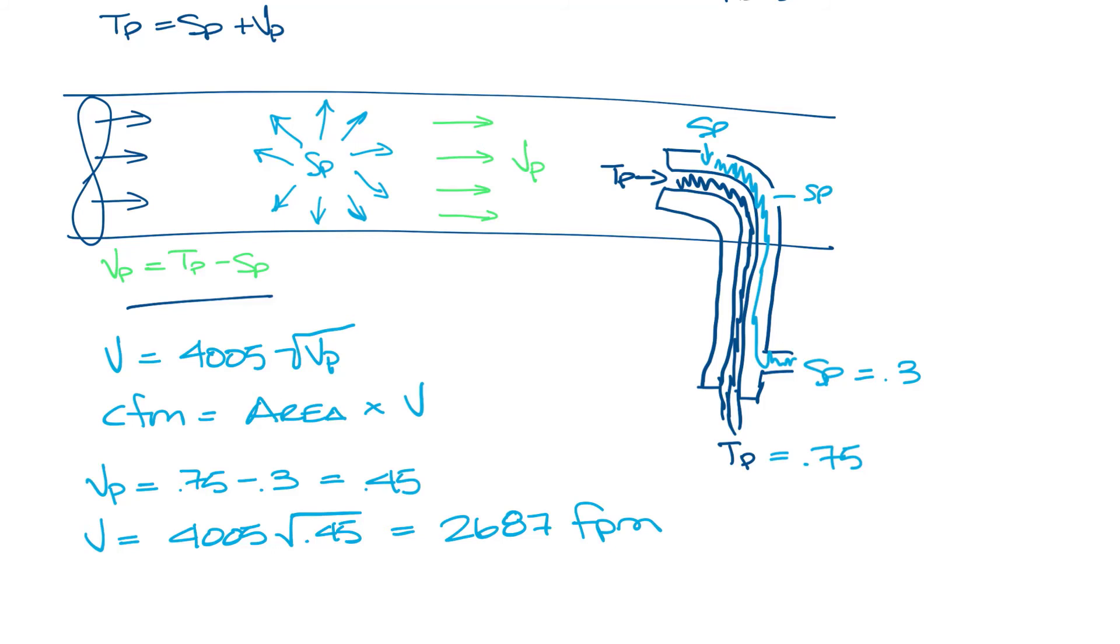Now let's say this is an 8 inch round duct here, so we can calculate the area. So the area of an 8 inch round duct is pi r squared, which equals 50.26 square inches, and we need to convert that to feet. So divide that by 144, and we get 0.35 square feet.